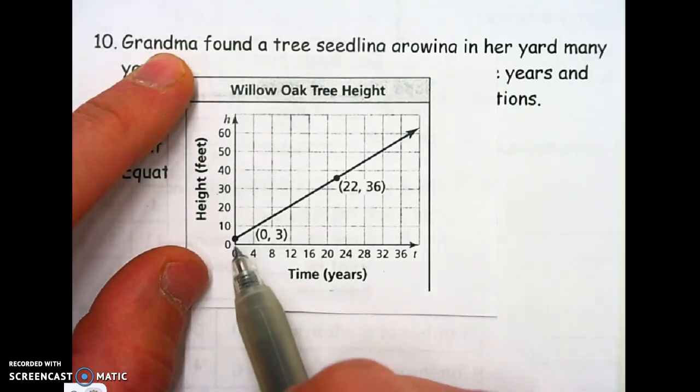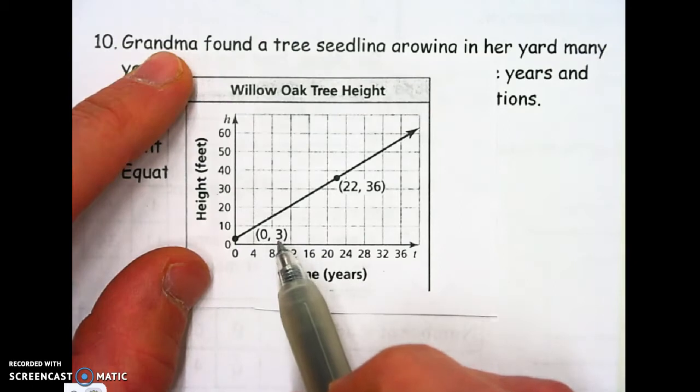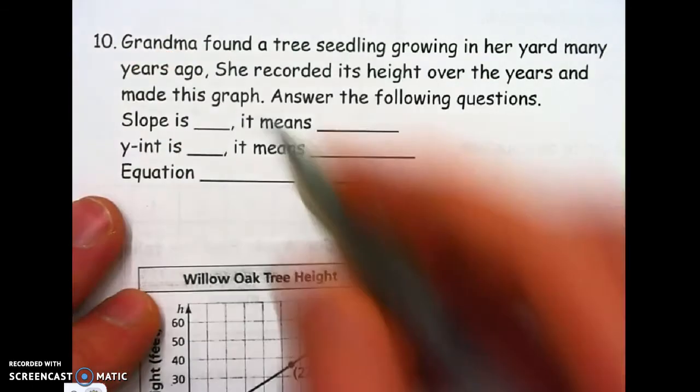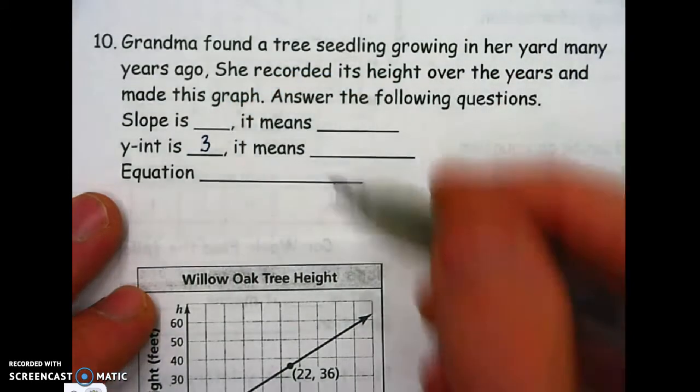You can't quite tell on this graph what it is, but this nice coordinate point here tells us that it hits at 3, exactly. So I'm going to write a 3 in here.